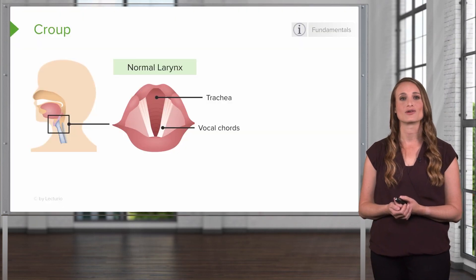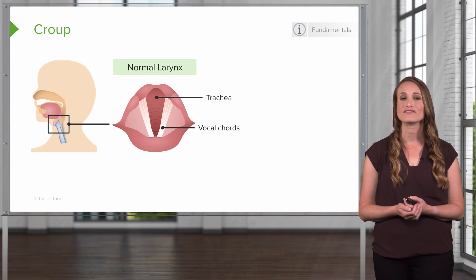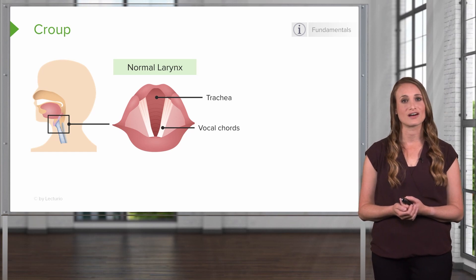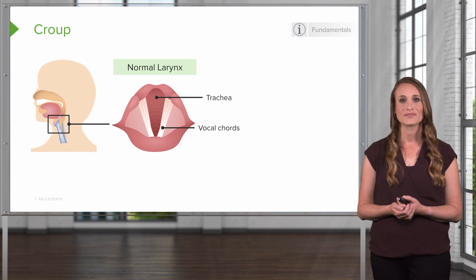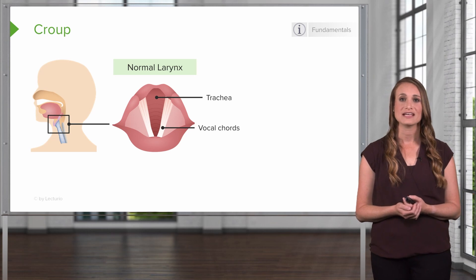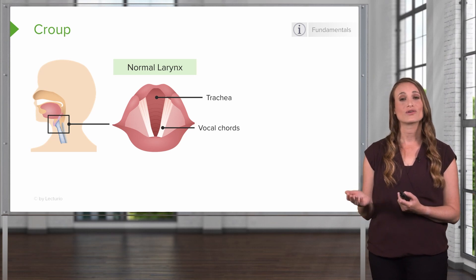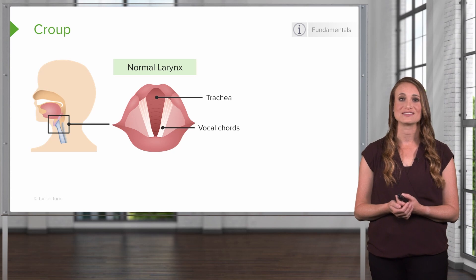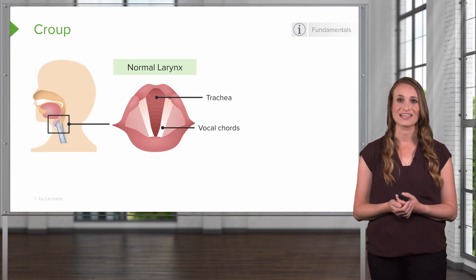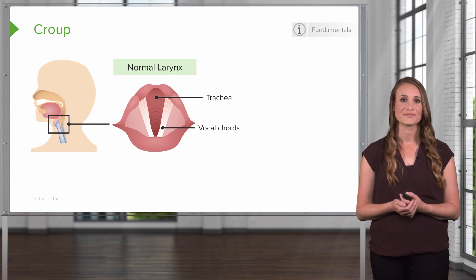Here on the left, you'll see the normal larynx. There's a normal tracheal opening, and the vocal cords are not swollen. Over on the right, you'll see an inflamed larynx. In the setting of croup, the vocal cords and the surrounding structures cause a narrowing of the trachea, and this causes the symptoms we see in croup.